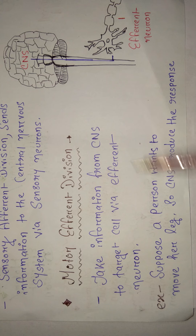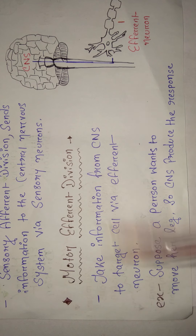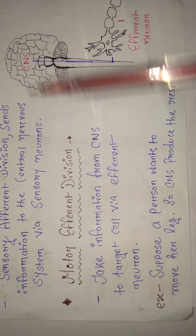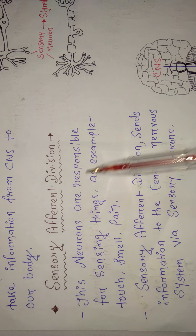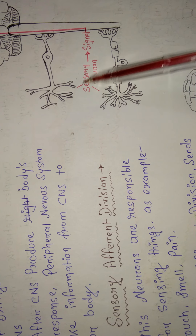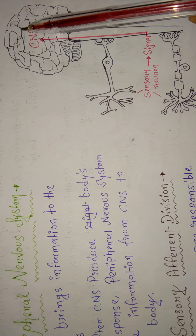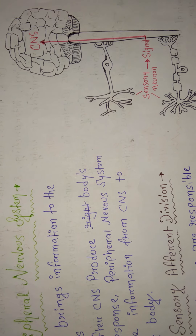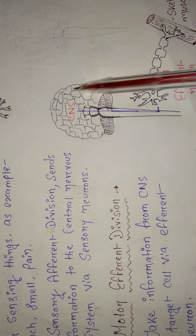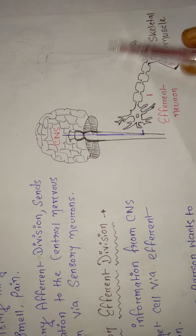Suppose a person wants to move her leg because she wants to run — she saw a snake. Her sensory nervous system sees the snake and takes that information to the central nervous system. The CNS understands she saw a snake and needs to run to save herself, so it produces a response: run. Then the motor neurons take that response from the CNS to the legs — the skeletal muscles — and she runs.